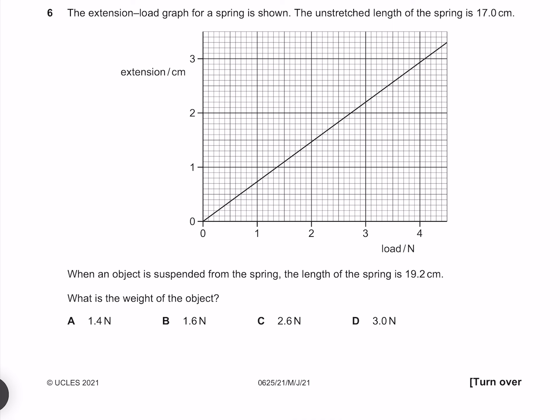The extension load graph for a spring is shown. The unstretched length of the spring is 17 centimeters. When an object is suspended from the spring, the length of the spring is 19.2 centimeters. What is the weight of the object? And so if we have our unstretched spring, which is 17 centimeters, and then when we add an object, that spring stretches to a distance of 19.2 centimeters. Our extension is this distance here, which is 19.2 minus 17, which gives us 2.2 centimeters. Our graph here tells us the amount of force produced for any given extension. For an extension of 2.2, we get a force of 3 newtons. And so our answer is D.